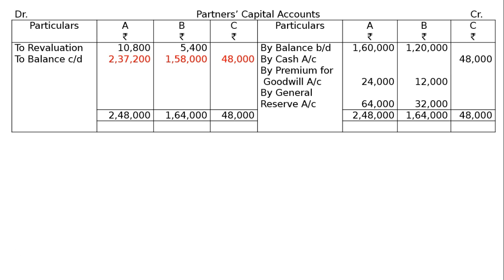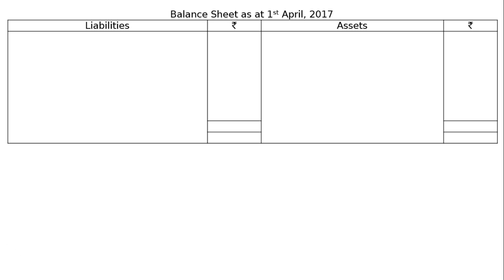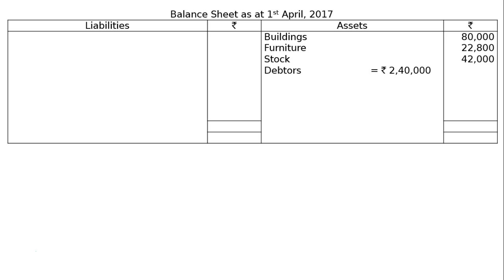Now we draw the balance sheet as at 1st April 2017 with liabilities and assets. Starting from the asset side: building — no change — rupees 80,000; furniture — revalued — rupees 22,800; stock — new value — rupees 42,000; debtors rupees 2,40,000 less reserve for doubtful debts rupees 9,000, giving rupees 2,31,000 in the final column. Next is cash at bank — no change — and cash in hand, which includes the rupees 84,000 brought in by new partner C, including goodwill of rupees 36,000.